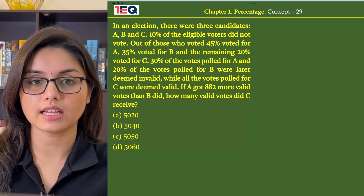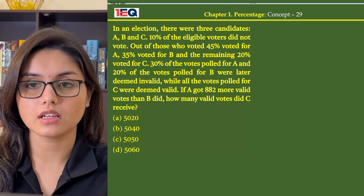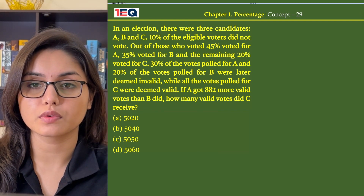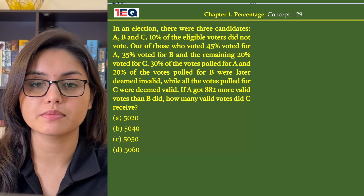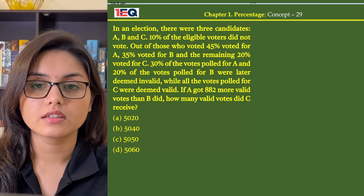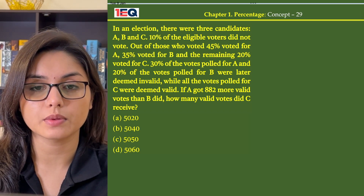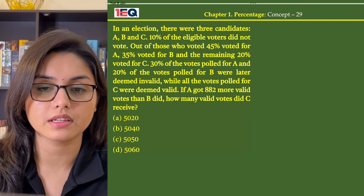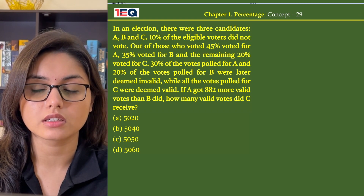In an election, there are three candidates A, B and C. 10% of the eligible voters did not vote. Out of those who voted, 45% voted for A, 35% voted for B, and the remaining 20% voted for C. 30% of the votes polled for A and 20% of the votes polled for B were later deemed invalid, while all the votes polled for C were deemed valid.